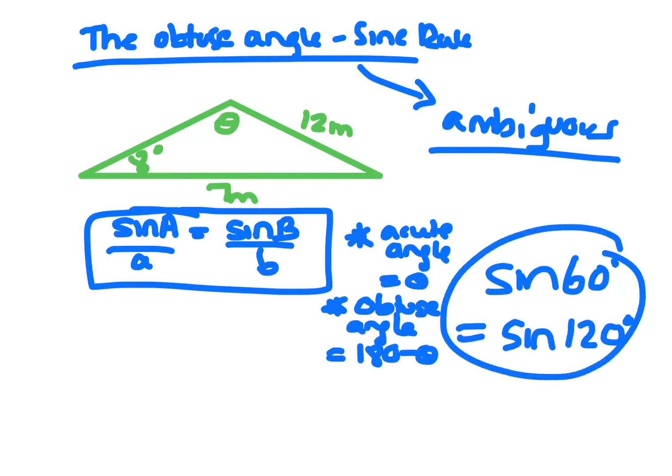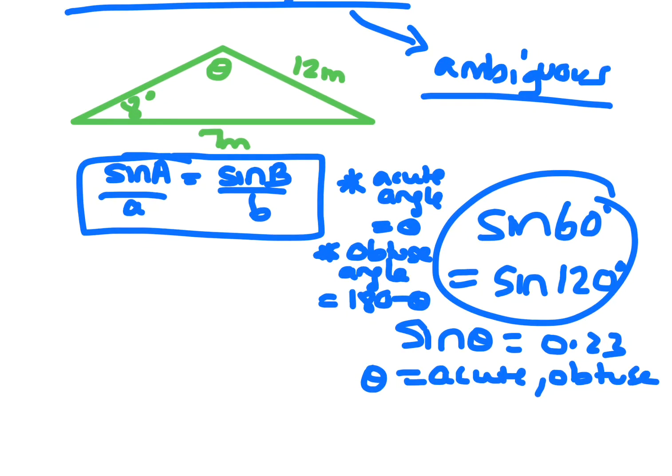When you end up with sine theta equals something like 0.23 and you go to find theta, theta could actually be acute or obtuse. So you actually need to find both of them, and the same for the triangle.